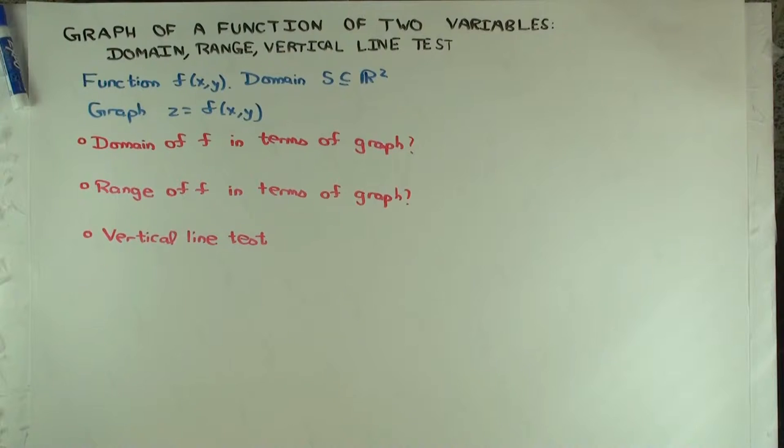So the x and y axes are the independent variable axes and the z axis is the what? So x and y are the independent variables and z is the dependent variable. Yeah, so z is the function variable.